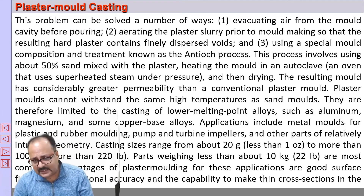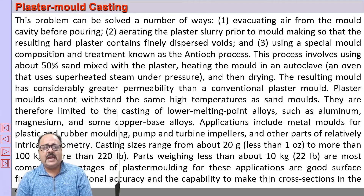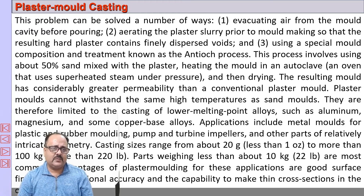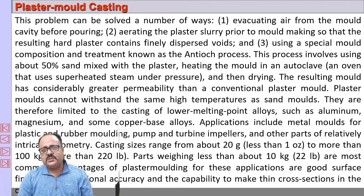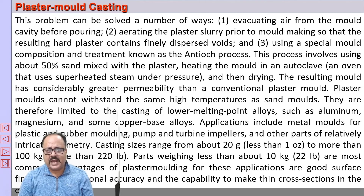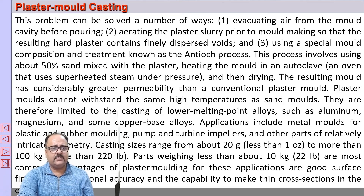One problem with plaster mold casting is that, although it gives a very good surface finish and the mold has high strength, the issue is with permeability — it is not permeable. To address this, we remove air from the mold and can also aerate the plaster slurry with air. The Antioch process is also used, where plaster is mixed with 50% molding sand, heated in superheated steam under pressure, and then dried. This creates the permeability required in this type of casting process.